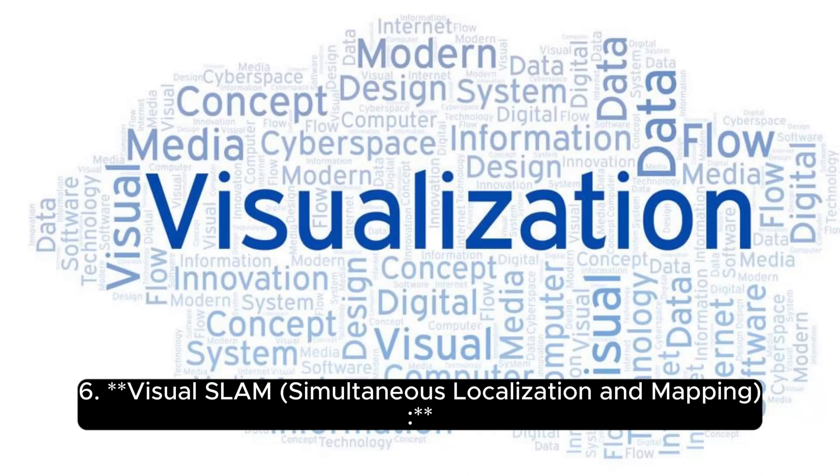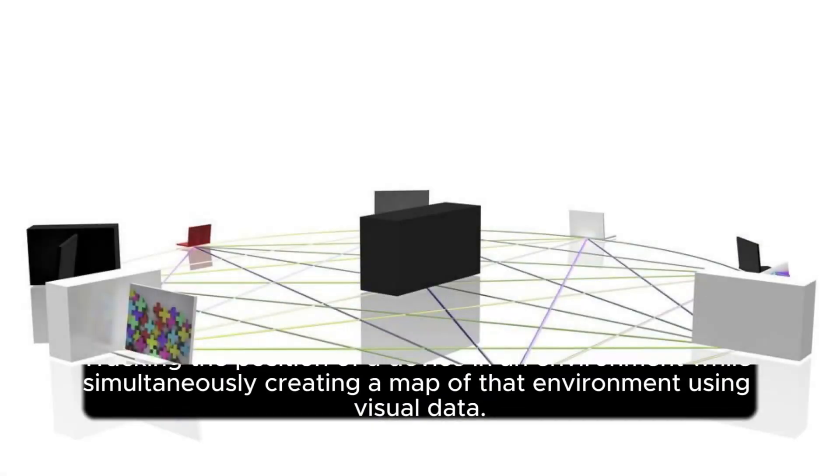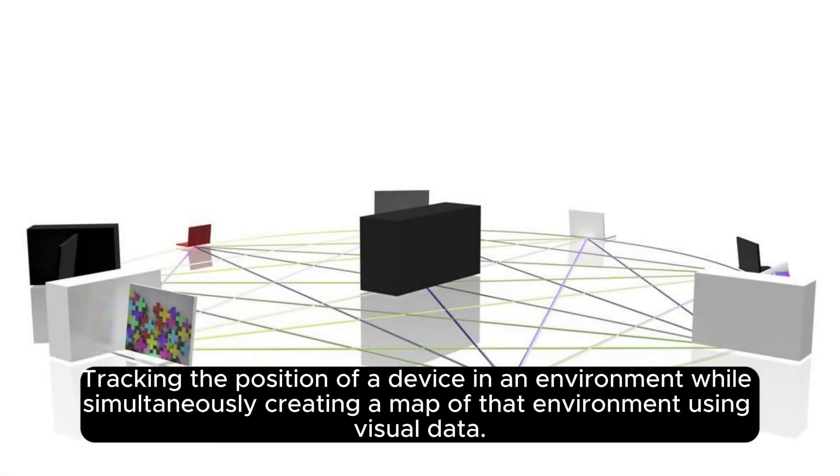Visual SLAM (simultaneous localization and mapping): tracking the position of a device in an environment while simultaneously creating a map of that environment using visual data.